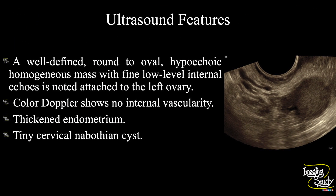In summary, a well-defined round to oval hypoechoic homogeneous mass with fine low-level internal echoes is noted attached to the left ovary. Color Doppler shows no internal vascularity. These features suggest a case of endometrioma or chocolate cyst. There were also findings of thickened endometrium and a tiny Nabothian cyst.